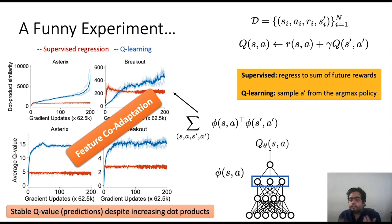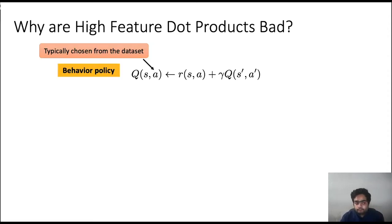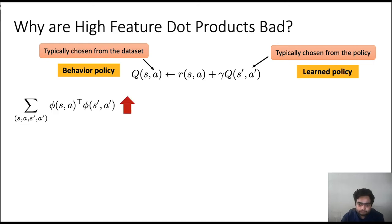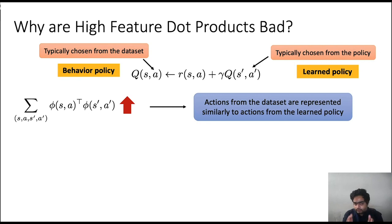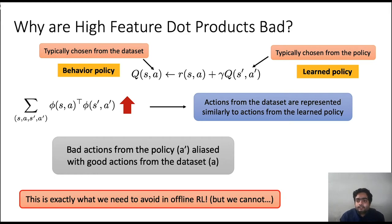We try to understand why feature co-adaptation happens and how it relates to bootstrapping. High feature dot products are bad because: in the bootstrapping update, action A from the left-hand side comes from the data set, while action A' on the right-hand side comes from the learned policy. When dot products between φ(s,a) and φ(s',a') are high, actions from the data set are represented similarly to actions from the learned policy. On a finite data set, bad unseen actions A' can get aliased to good seen actions A — causing the algorithm to erroneously think an unseen action is good. This is precisely the core problem in offline RL.